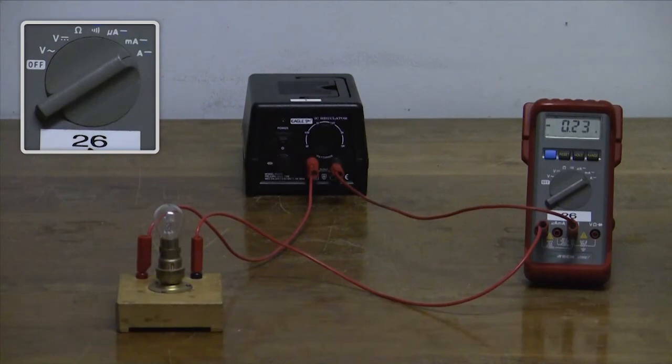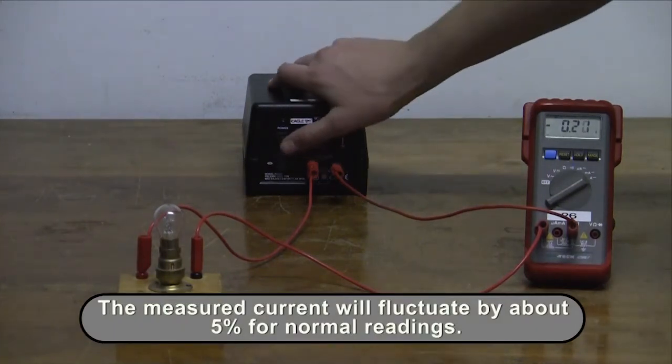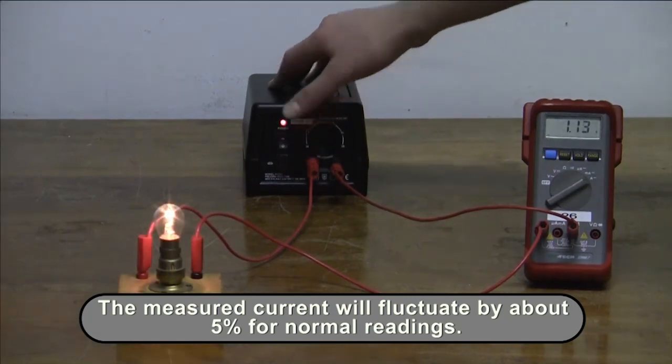In this example, we are using the ampere range. It is normal for the current readings to fluctuate by about 5%.